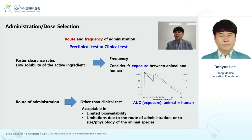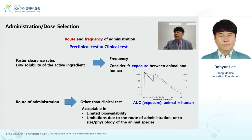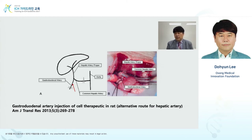For administration and dose selection, the route and frequency of administration must be the same between preclinical and clinical. Realistically it is difficult, so a faster clearance rate can be compensated with increased frequency to achieve the same level of exposure. The concept of exposure can be explained as AUC — in this graph, the animal PK shows faster clearance rate, so an additional administration at 12 hours is added to achieve similar AUC and similar exposure. Route of administration must also be the same.